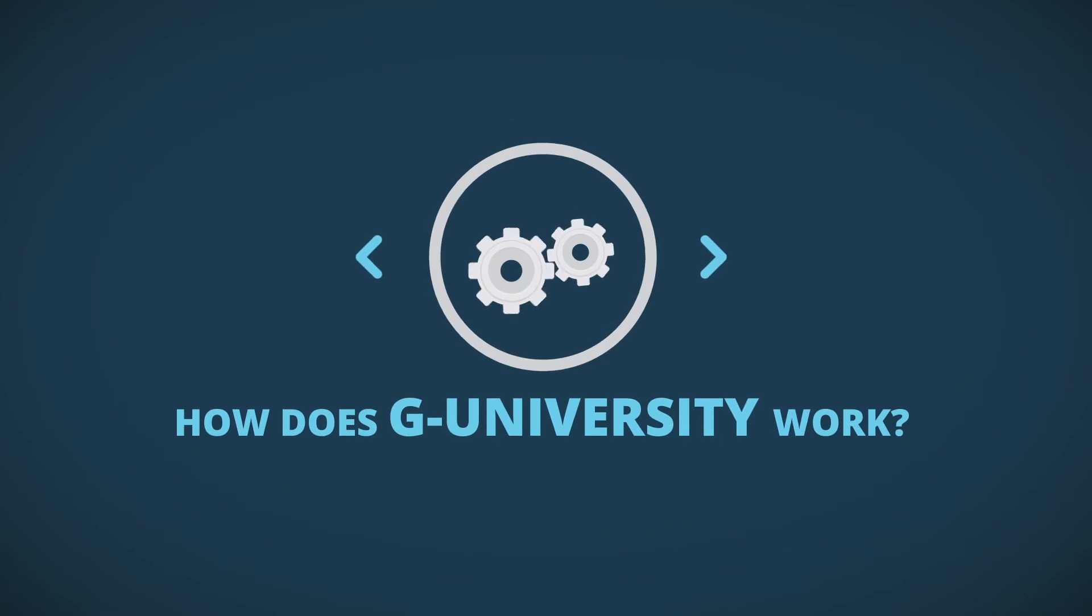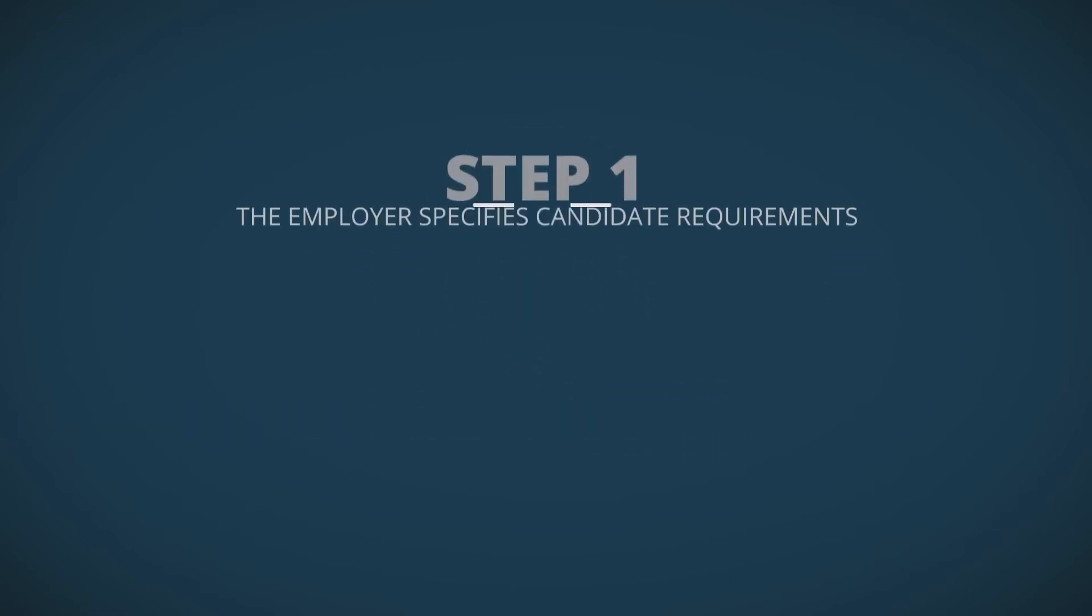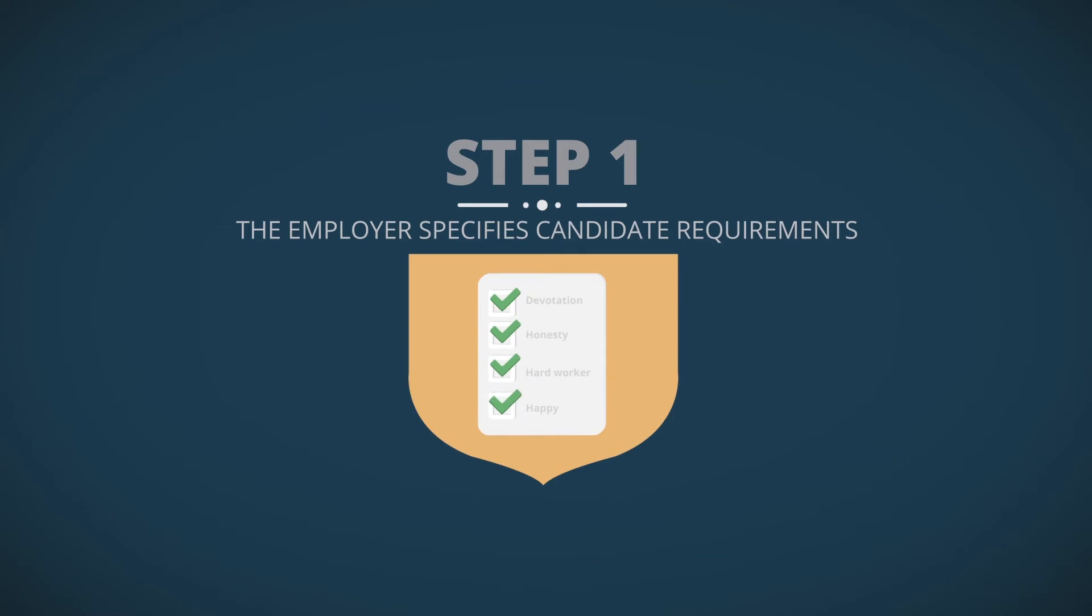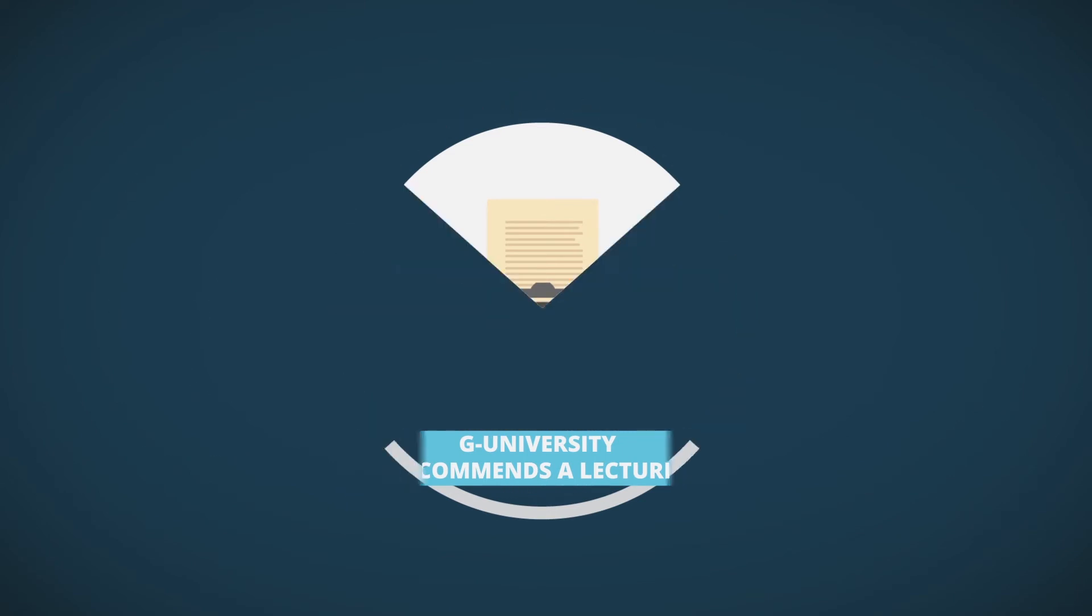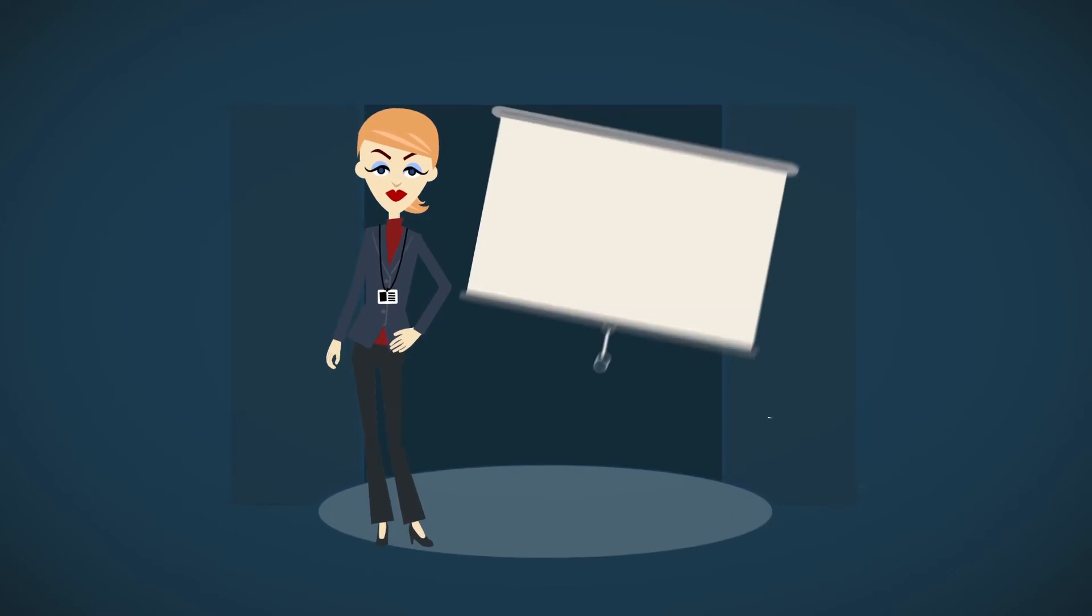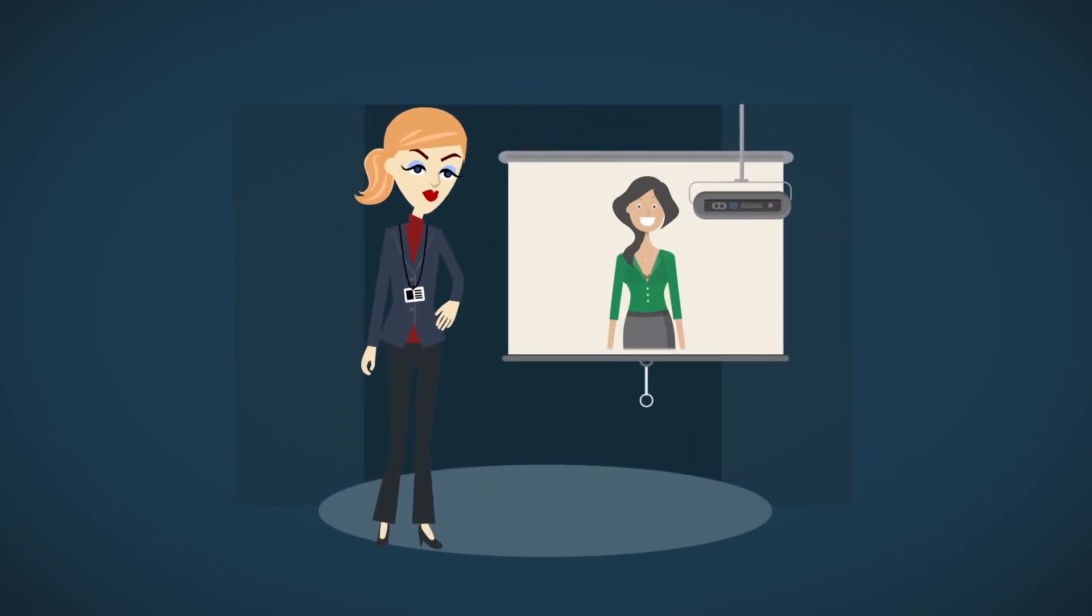How does G University work? Step 1: the employer specifies candidate requirements. Step 2: G University recommends a lecturer to carry out the necessary lectures or courses. Step 3: the lecturer conducts the lectures and puts them on video.